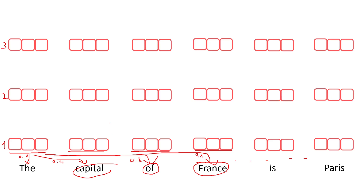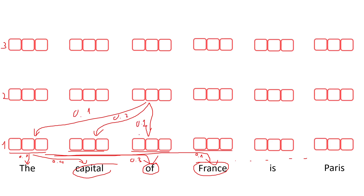The same happens when we go to the second layer: it will look at the representations from the previous layer, assign a weight to each of the possible routes, and then based on these weights, route the information from this layer to the next layer at that position. This is the attention mechanism in the transformer model as presented in the 'Attention Is All You Need' paper.